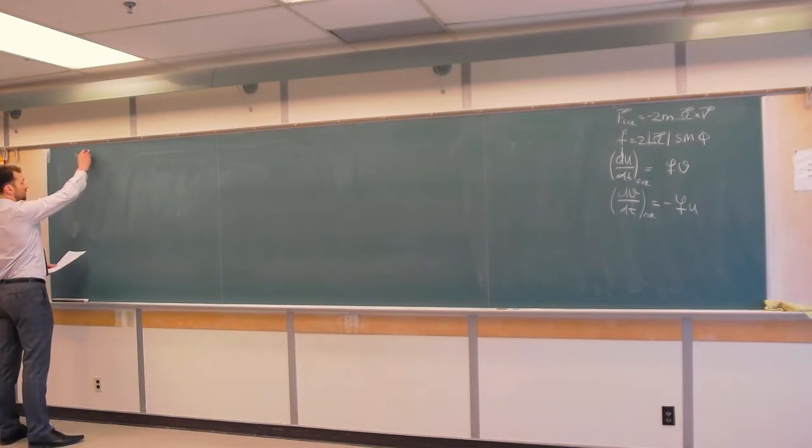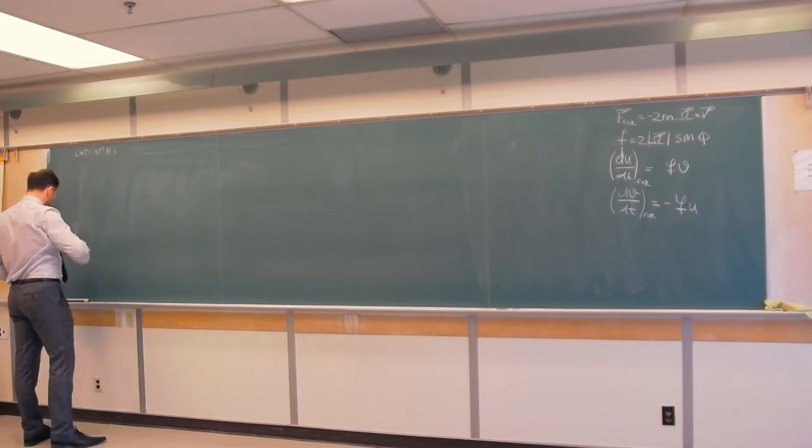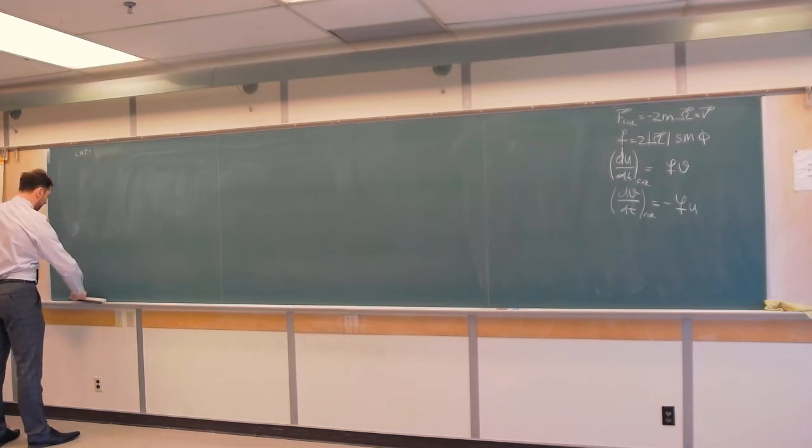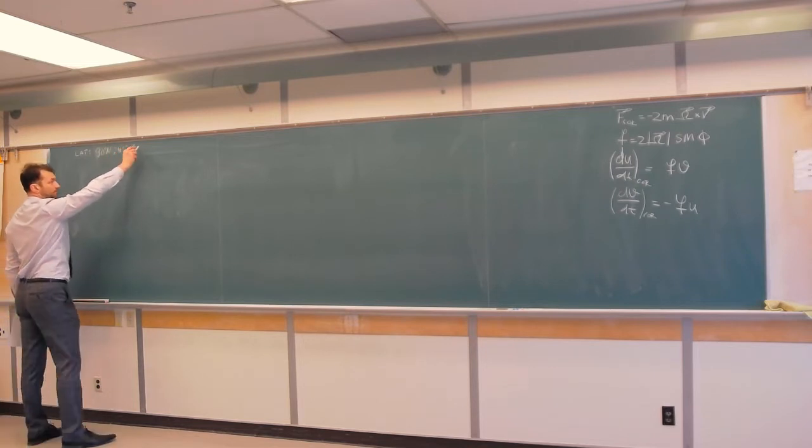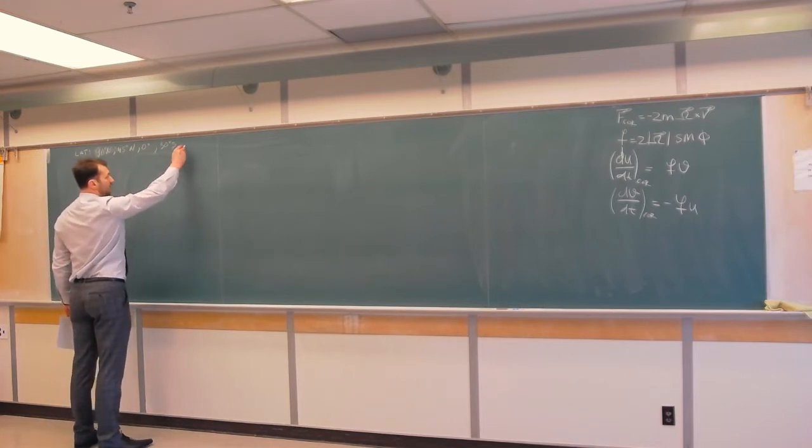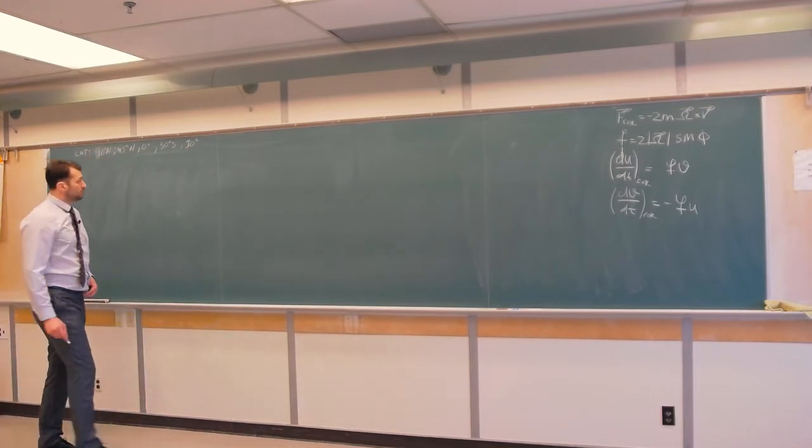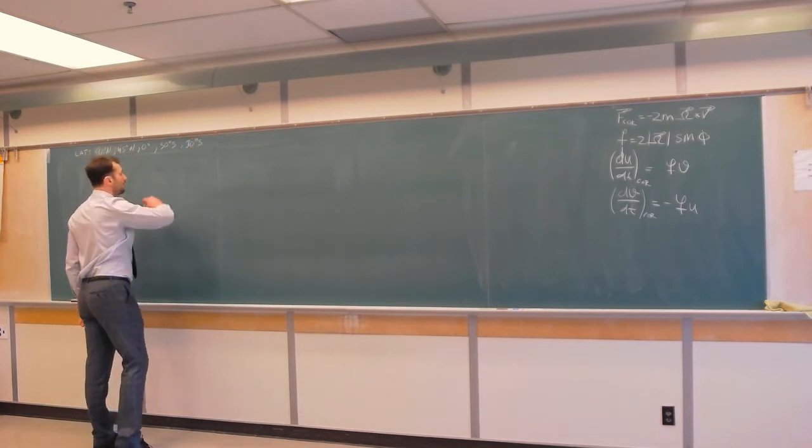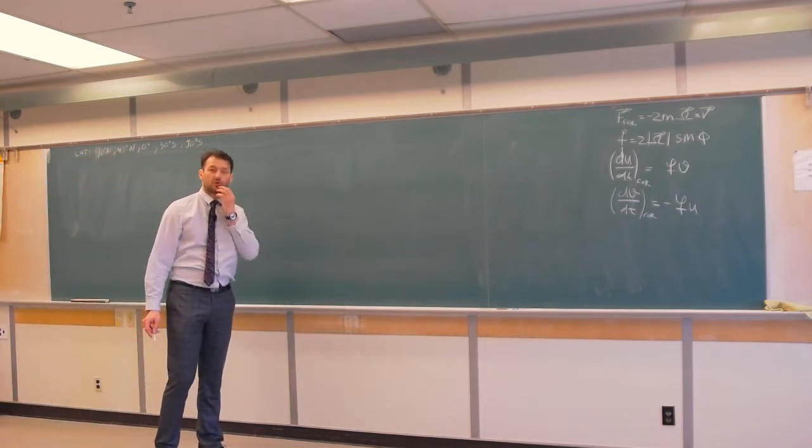And latitudes are: first is 90 degrees north, 45 degrees north, 0 degrees or equator, 30 degrees south, and 90 degrees south.